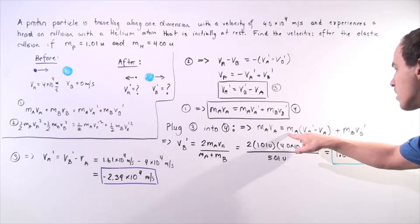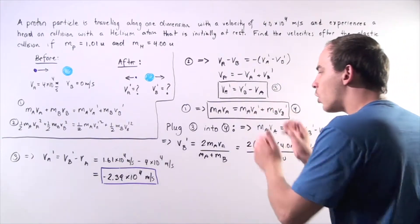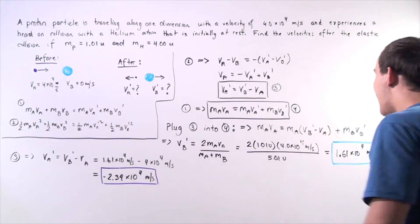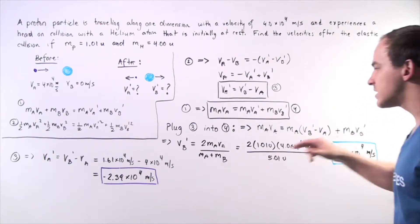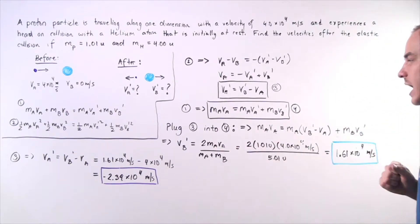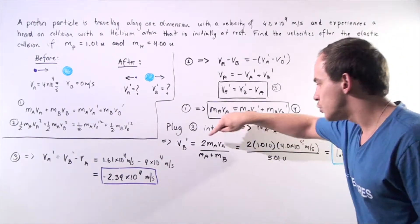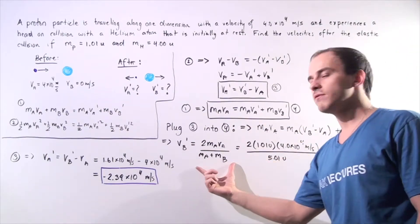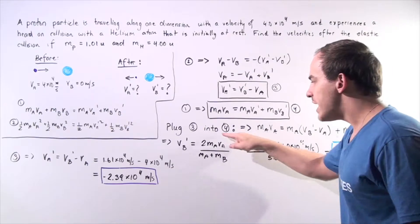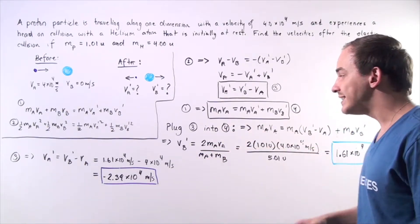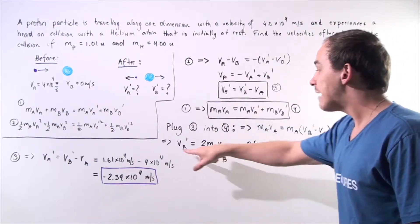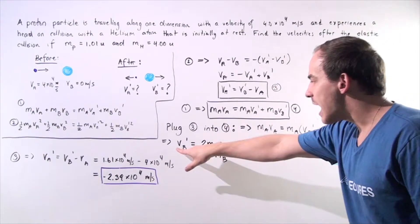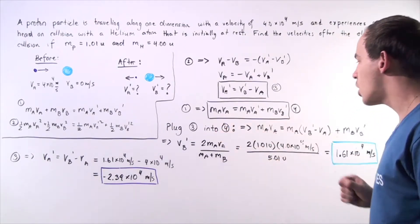Multiplying out the Ma terms and collecting all Vb' terms on the left side and non-Vb' terms on the right side, we arrive at: Vb' equals 2 times Ma times Va divided by the sum of their masses. We now have all known values on the right side and can solve for Vb'.